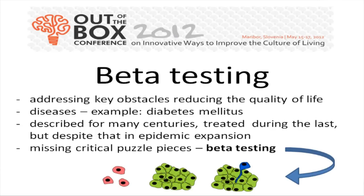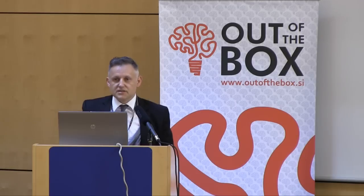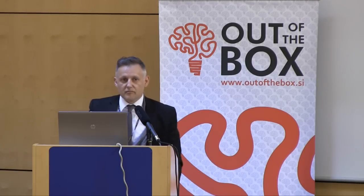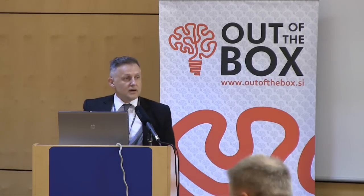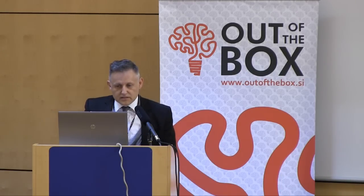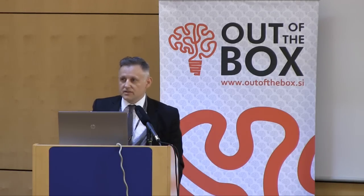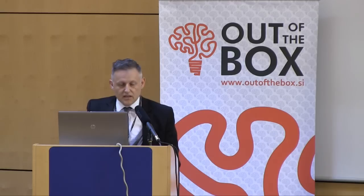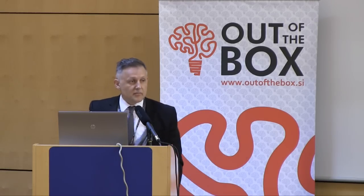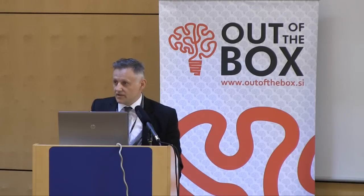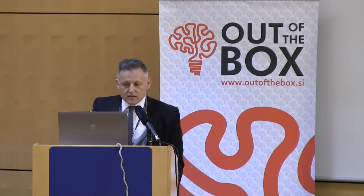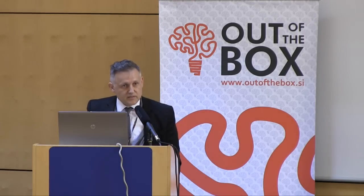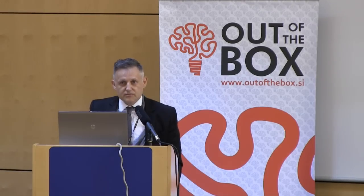I will talk about a disease called diabetes mellitus, which is definitely changing the life of many hundreds of millions of people on this planet. The disease has been described for many centuries — we have records of it from about 3,000 years ago. It has been, to some extent, treated during the last century. But despite that, it is in epidemic expansion, so we don't control it the way we would want. Because we are missing some critical puzzles in understanding the disease, we are still, as you would put it in computer jargon, at the level of beta testing.